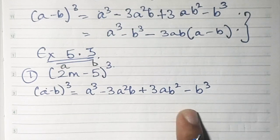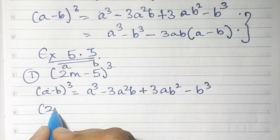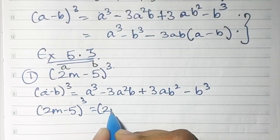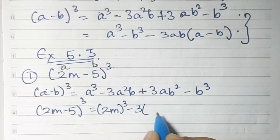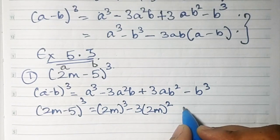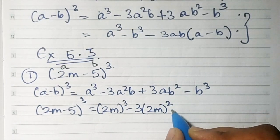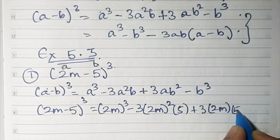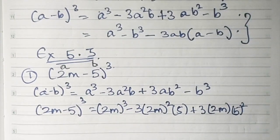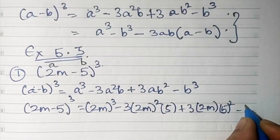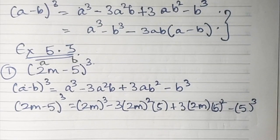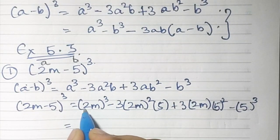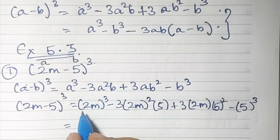Once the formula is done, do the substitution. So (2m - 5)³: a is 2m, so we have (2m)³ minus 3(2m)² times 5, plus 3(2m) times 5², minus 5³. Formula is done, substitution is done, now the solving part.